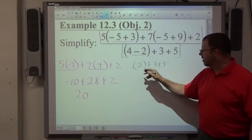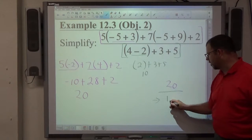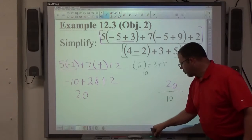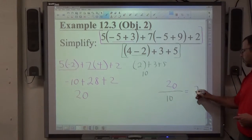2 plus 3 plus 5 adds up to 10. So 10 goes on the bottom. So I evaluate the top, I evaluate the bottom. 2 over 1. And 20 divided by 10 divides 2 over 1, or just 2.